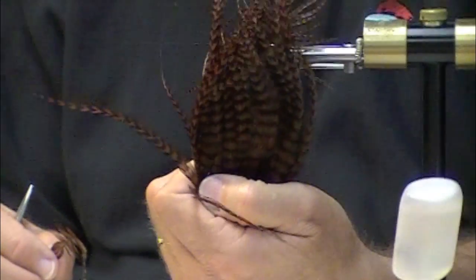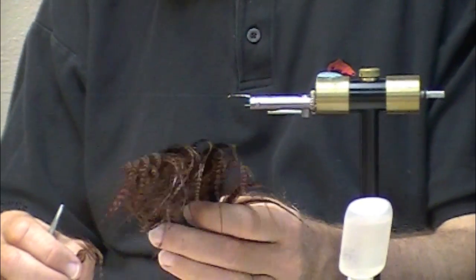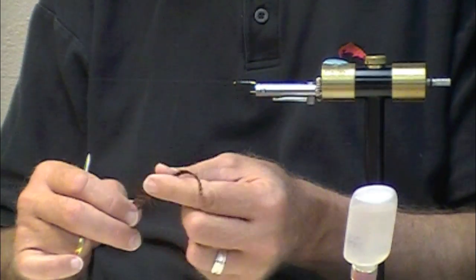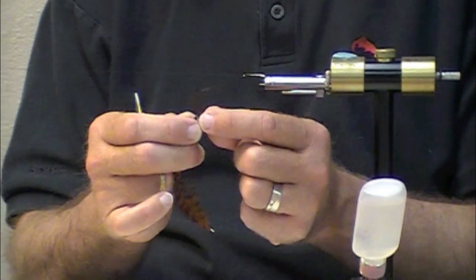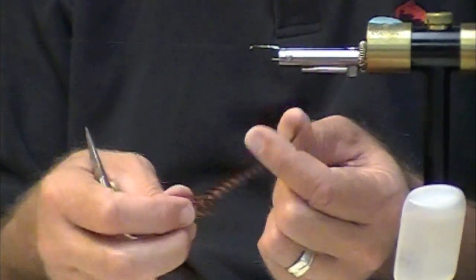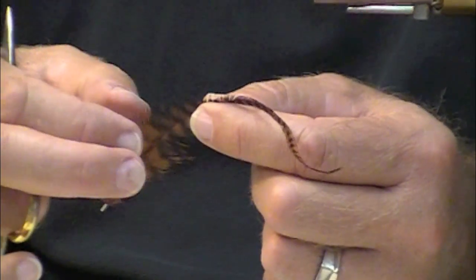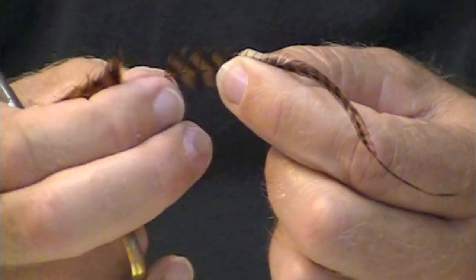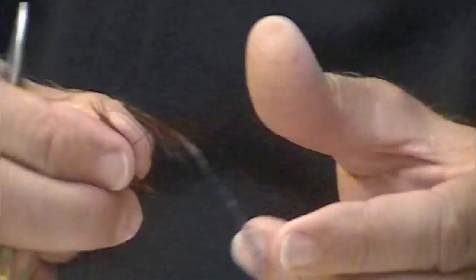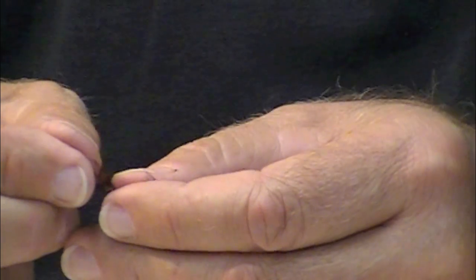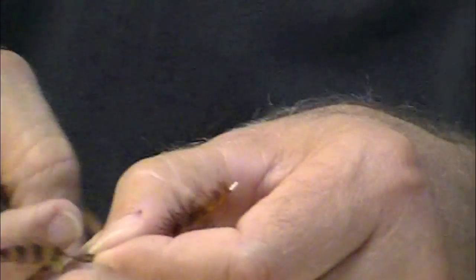So the rear hackle is this American saddle clump. It's absolutely amazing stuff. Look at this, look at the length. I'm not using that, I use that for dry flies, little bitty dry flies. What I'm looking for is this webby stuff down at the base, and I'm a stickler for tying these hackles in by the tip.